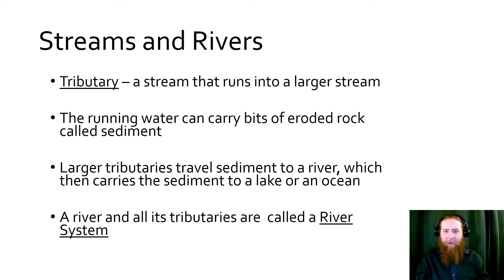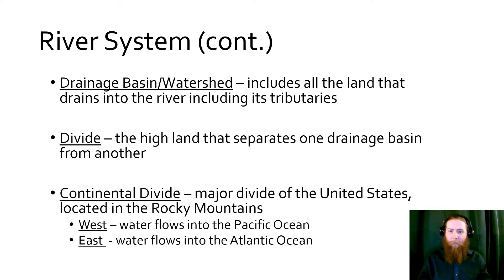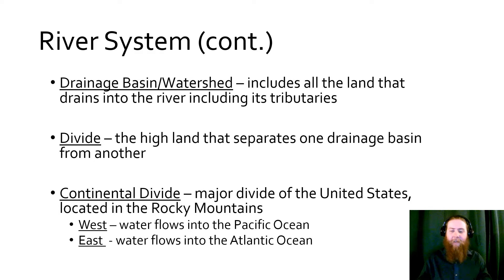A river and all of its tributaries are called a river system. Part of the river system is the drainage basin, or watershed — this includes all the land draining into the rivers, including its tributaries. This is all of the mountainous structures and areas that aren't the river, over which water flows to get into the river. This brings us to the concept of a divide: the water on one side of a mountain range flows into one drainage basin, and the other side flows into a different, unique drainage basin.